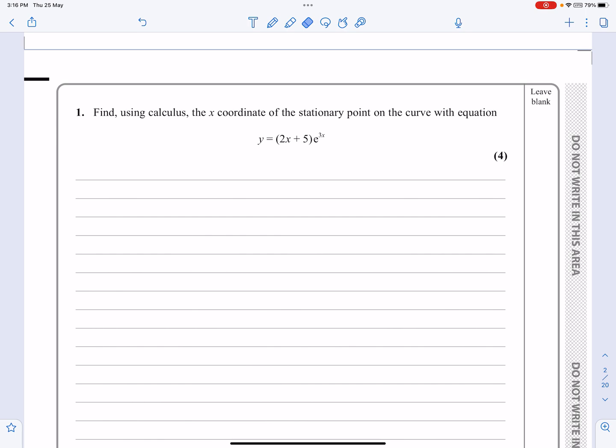The first thing we can say is that if we've got y equals (2x + 5)e^(3x), then the way that I do these product questions is I choose u to be one of the expressions and v to be the other one. Then I'm going to differentiate. I tend to put my differentials underneath here.